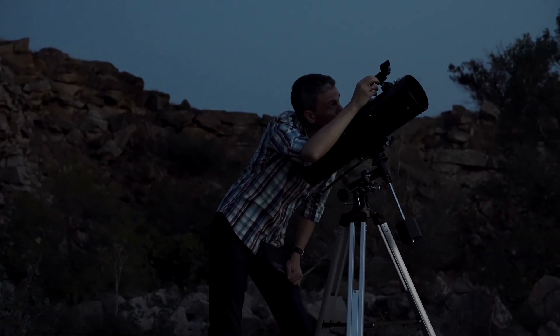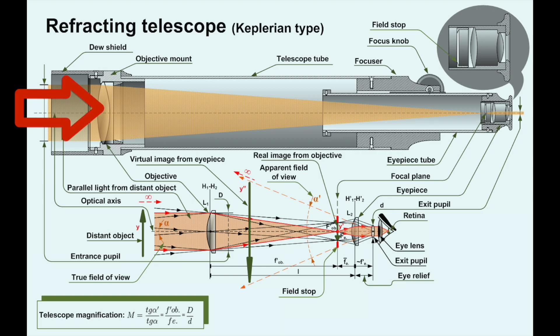Astronomy terms made easy. What is focal length? Focal length is the optical distance light takes from entering the telescope or lens until it reaches the focal plane of the camera sensor or your eye. This distance is usually measured in millimeters.